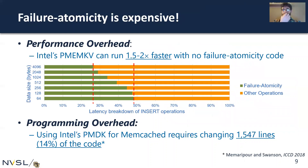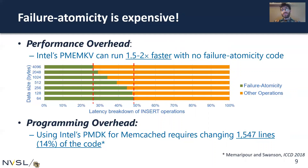The problem with failure atomicity is that it's expensive — there's a performance overhead and a programming overhead. Intel's PMEM KV, an industrial-strength key value store on Optane memory, runs 1.5 to 2x faster if you strip out all the failure atomicity code, showing that a large portion of its work is maintaining consistent persistence. We also looked at adding Intel's PMDK to memcached, which required changing about 1500 lines of code, introducing not only significant work but also potential errors.